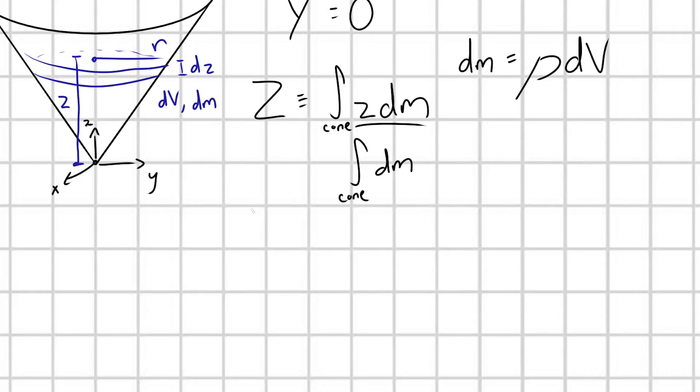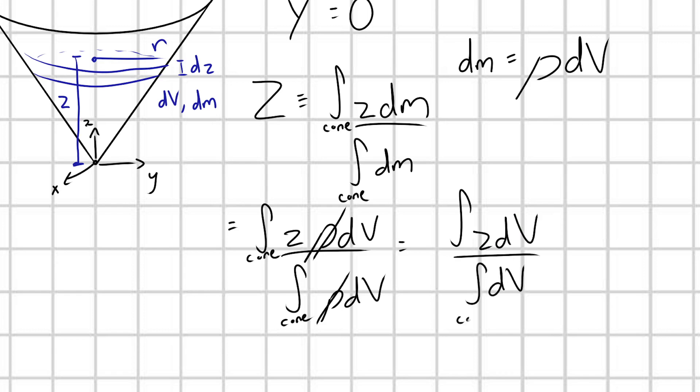Let me go ahead and just plug that in. I'm going to have integral over my cone of z rho dV over integral over my cone rho dV. But rho is just a constant, because we have a uniform cone, so my mass density is going to be constant. So we can simply cancel rho and rho out, and we're left with the following form: integral z dV over integral dV, and this is all still over my cone.